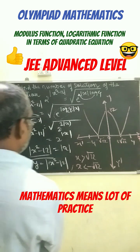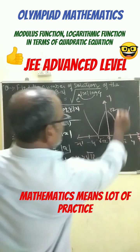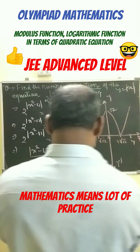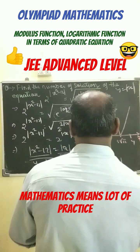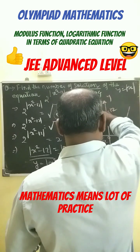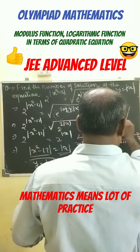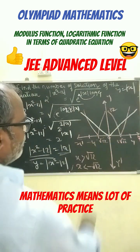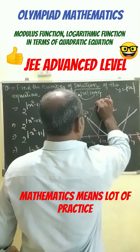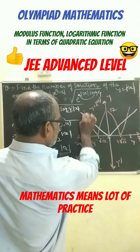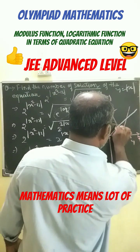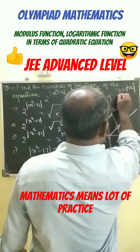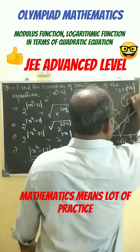Now for y equals to mod x, the graph is in this way. So y equals to mod x graph is this. Number of solutions: here it is 1, here it is 2, here it is 3, and here it is 4. So the number of solutions is 4, which is the correct answer.